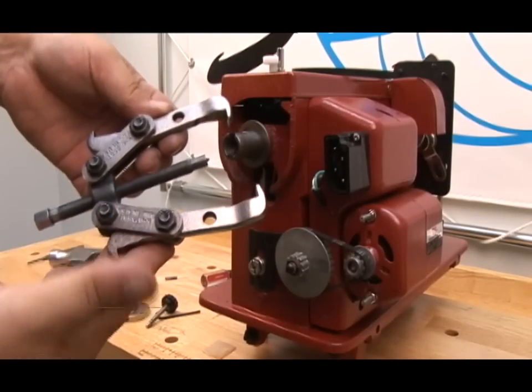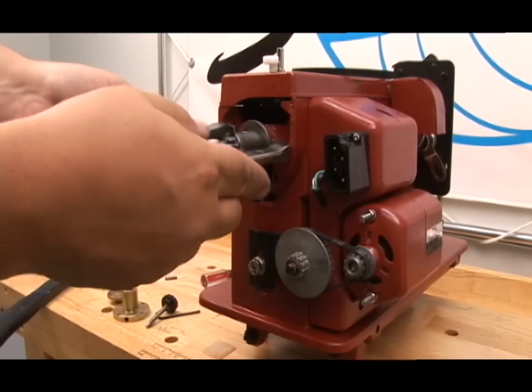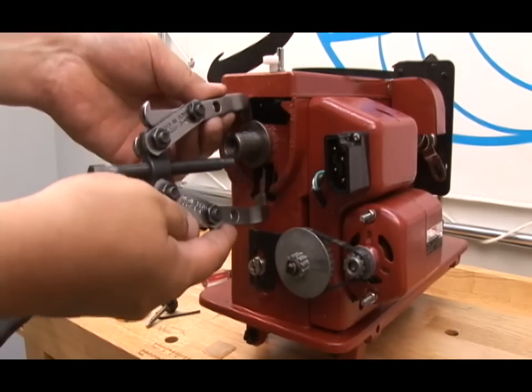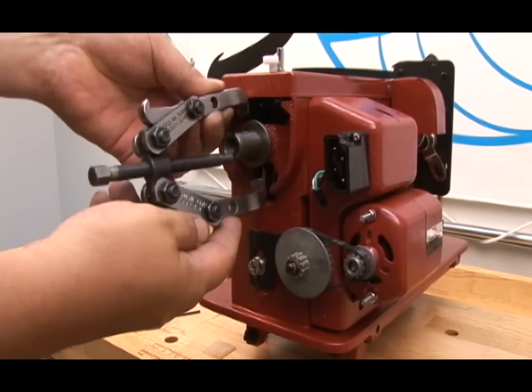If you have a gear puller, we recommend using it to remove the bushing. Do not use a screwdriver as you may pull the shaft out of place. A gear puller works great.